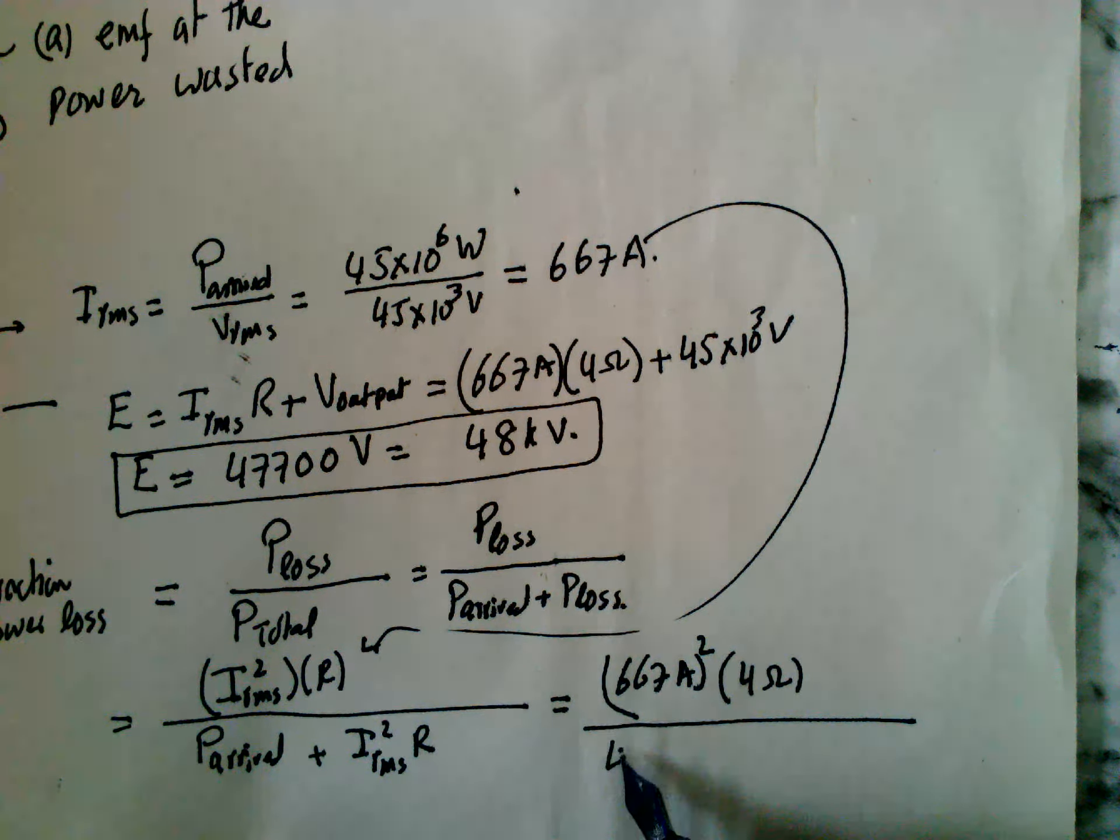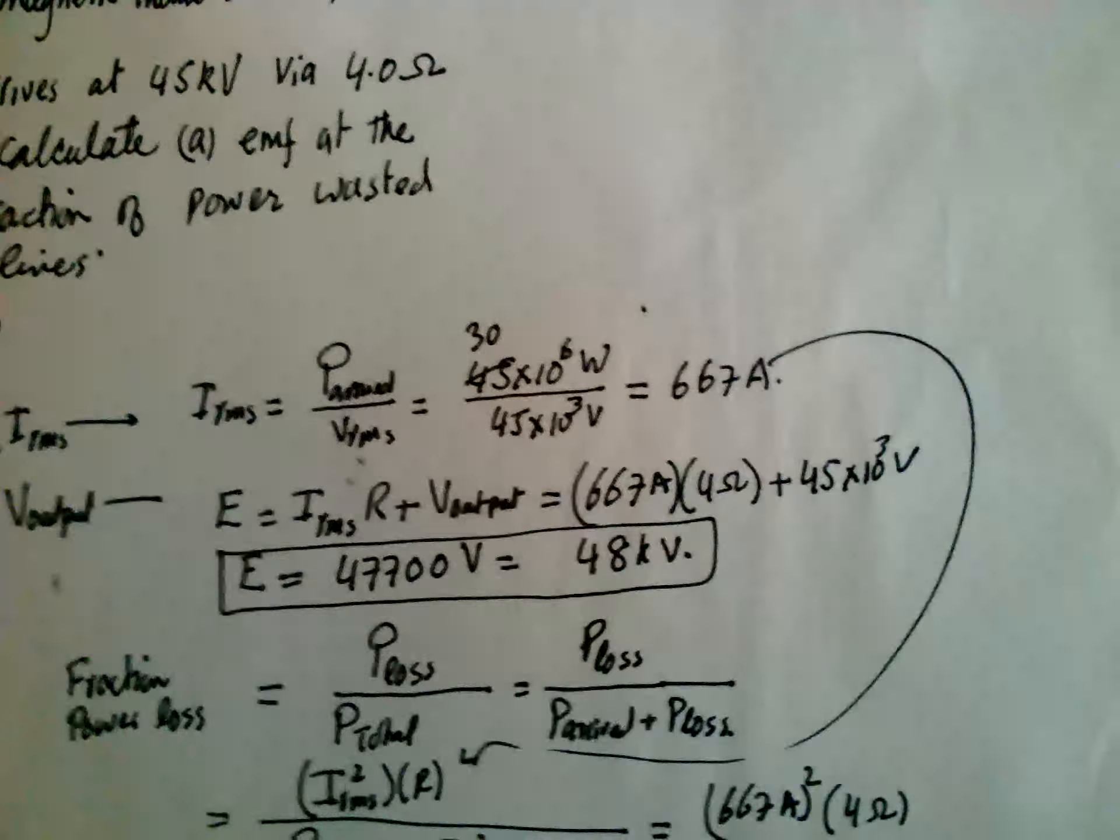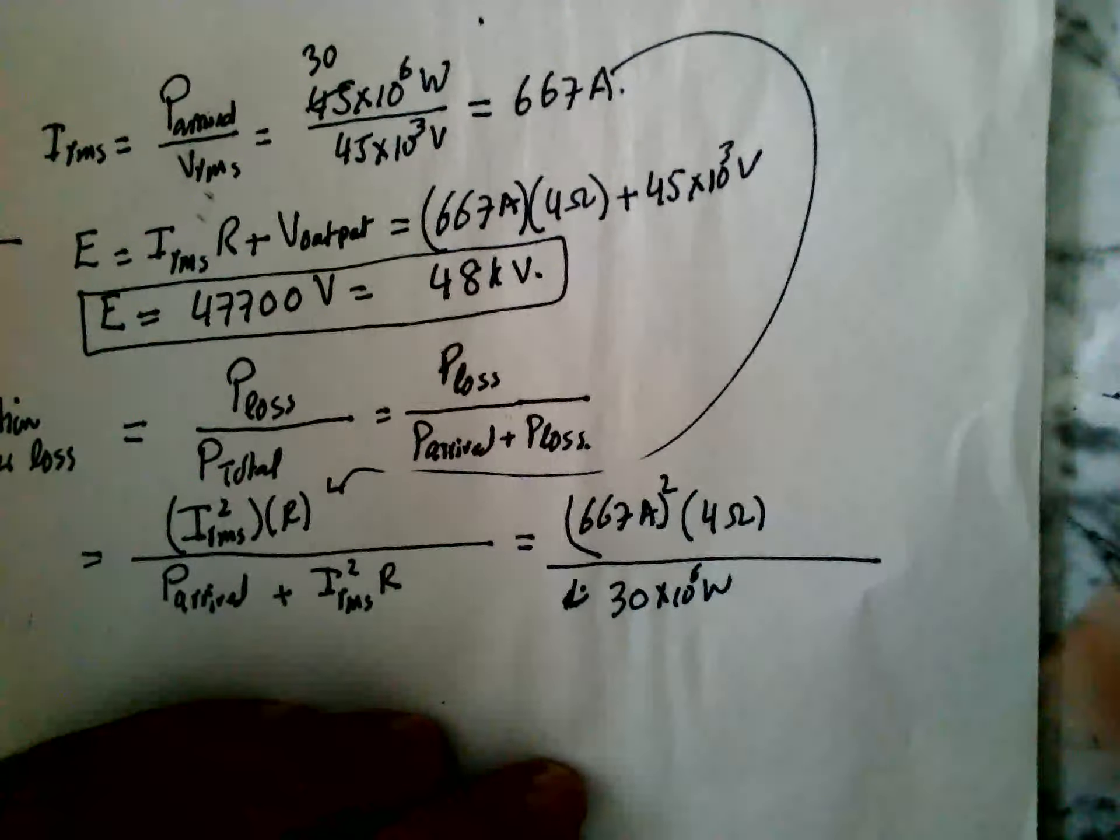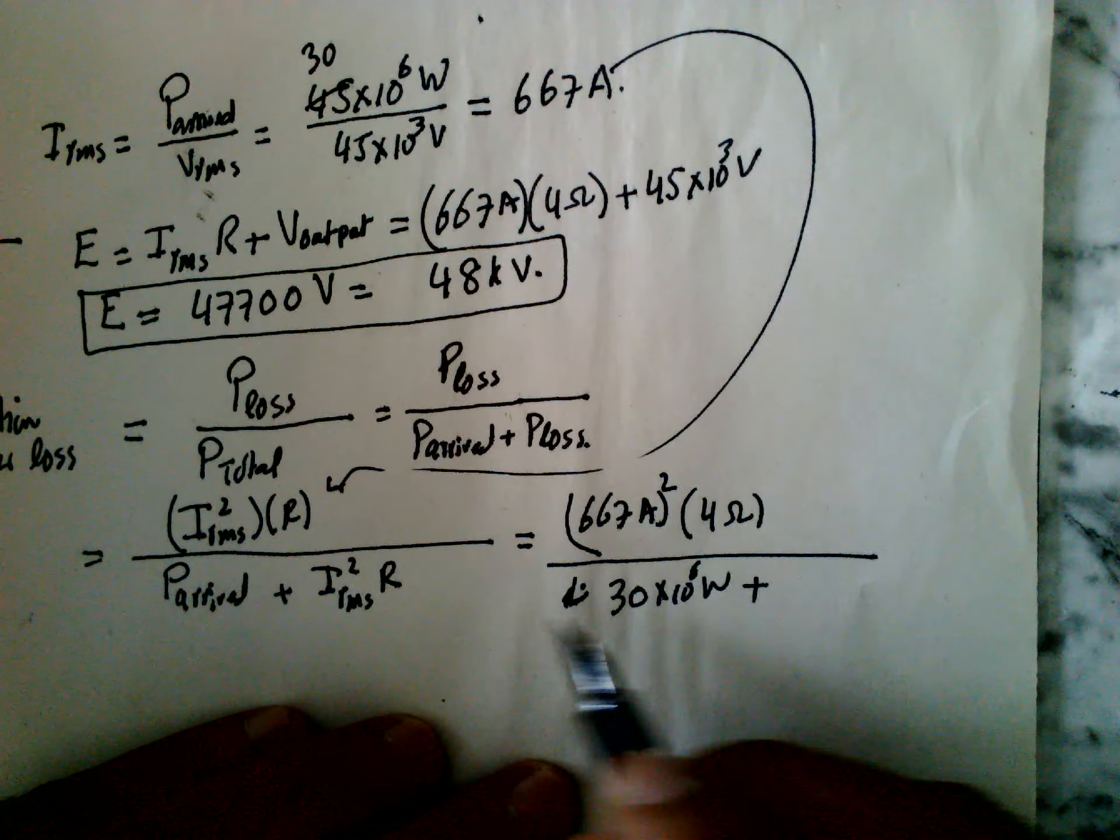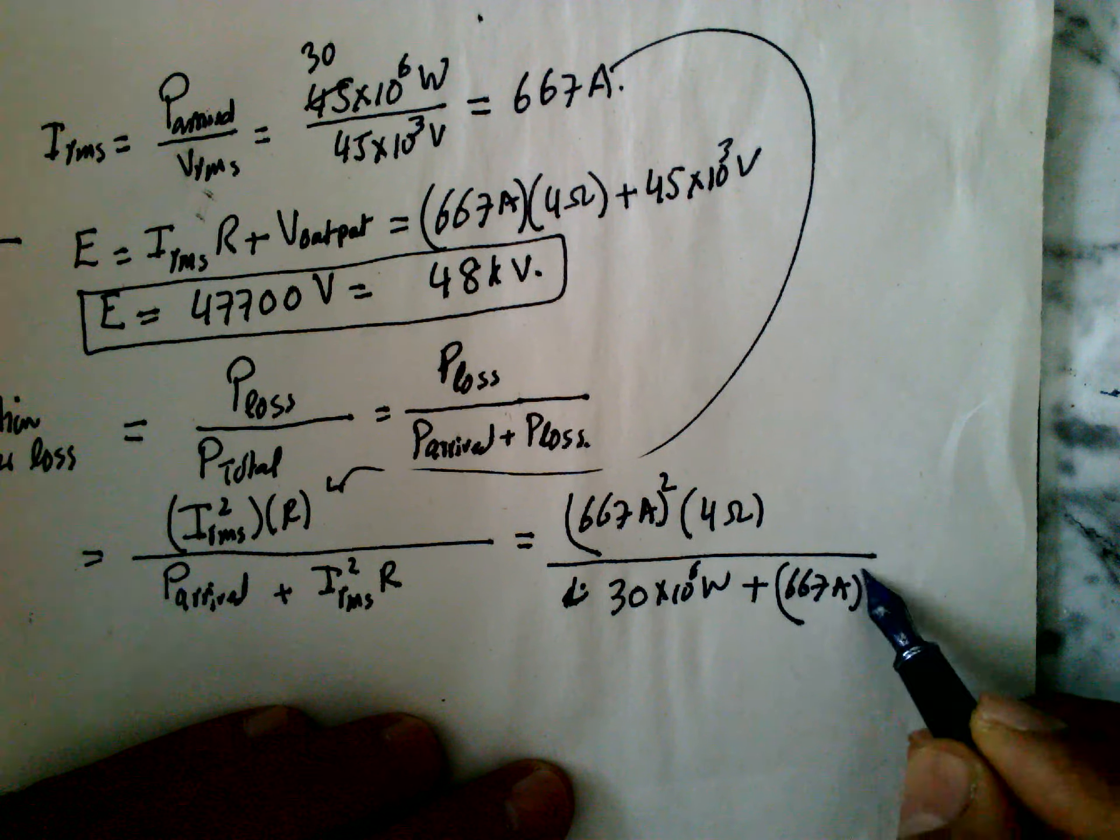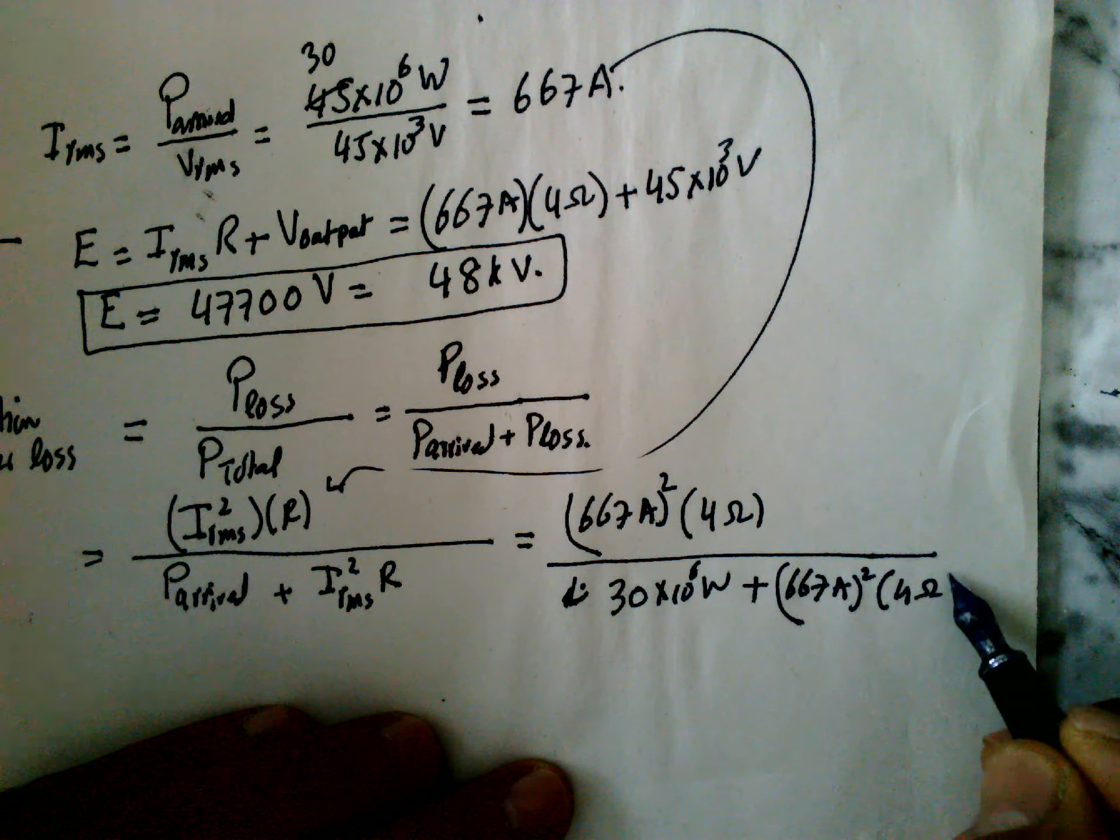Power arrived is 30 megawatts. All right, okay, this should be 30 megawatts, sorry about that. So 30 megawatts plus this one same, 667 amperes whole squared multiplied by 4 ohms.